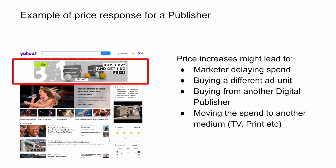Let's consider a digital publisher selling an individual ad unit on their page — perhaps it's the banner at the top of the page and they want to sell a takeover for the day. If the price increases, the marketer has a number of options: they may delay the spending, they may choose to buy a different ad unit from the same publisher, they may buy from a different digital publisher, or they may move spend to a different medium entirely — for example, television or print. As you can see, there are a range of options, which leads us to infer that most digital media is relatively price elastic, and in fact this has largely been my experience.